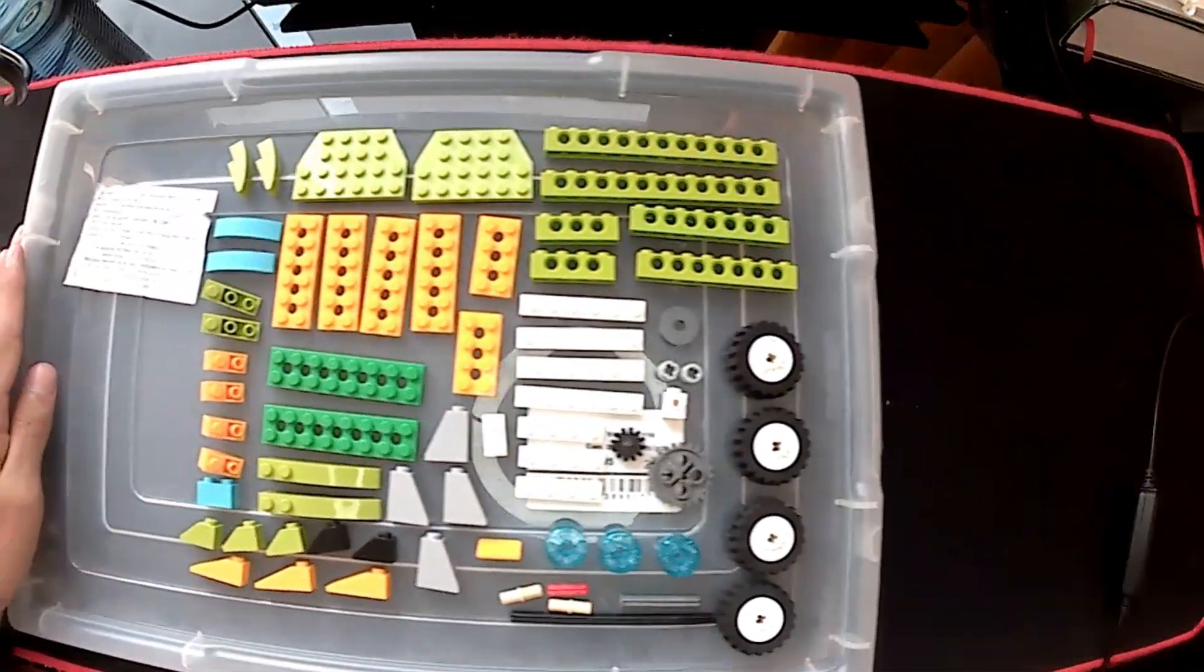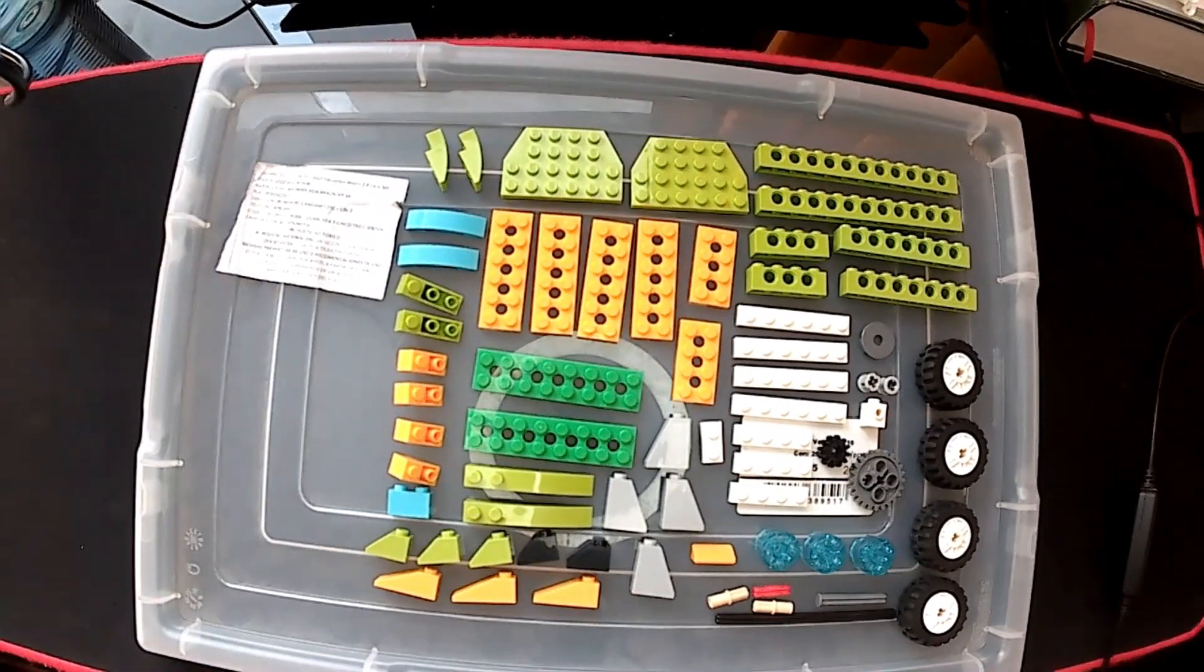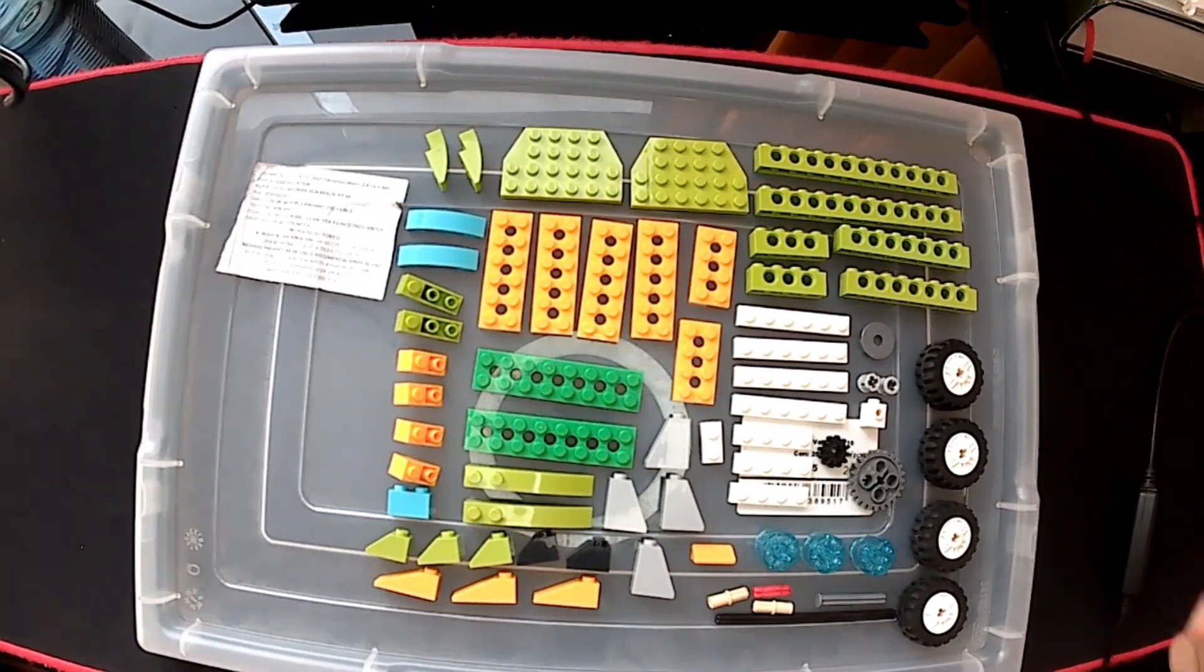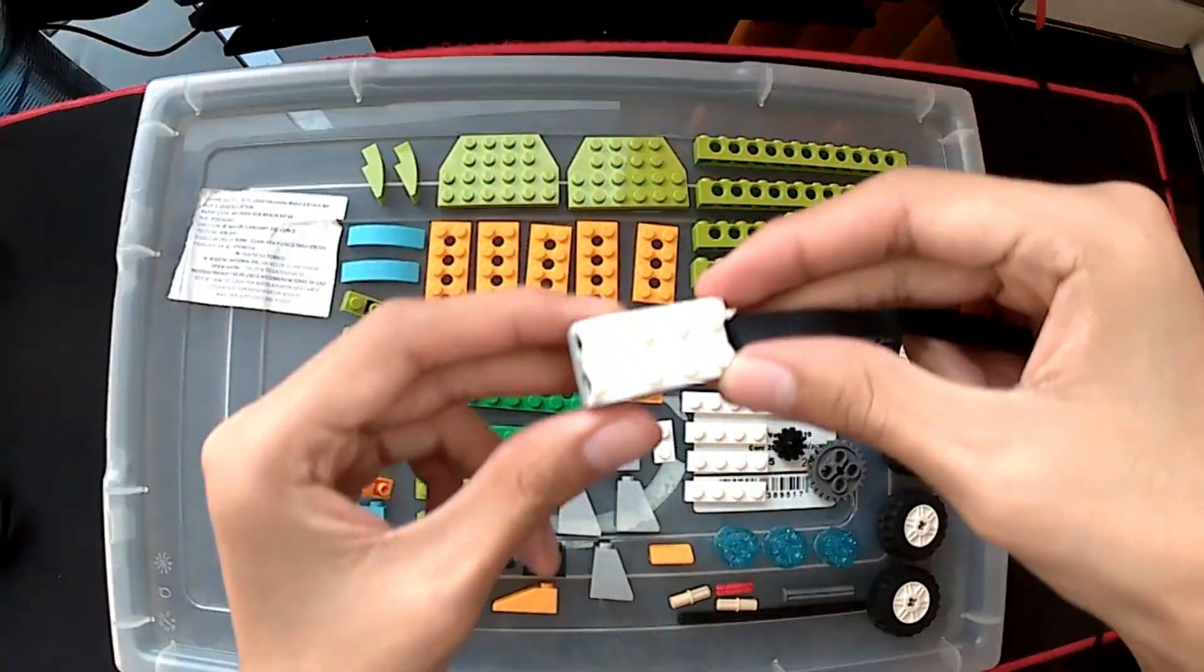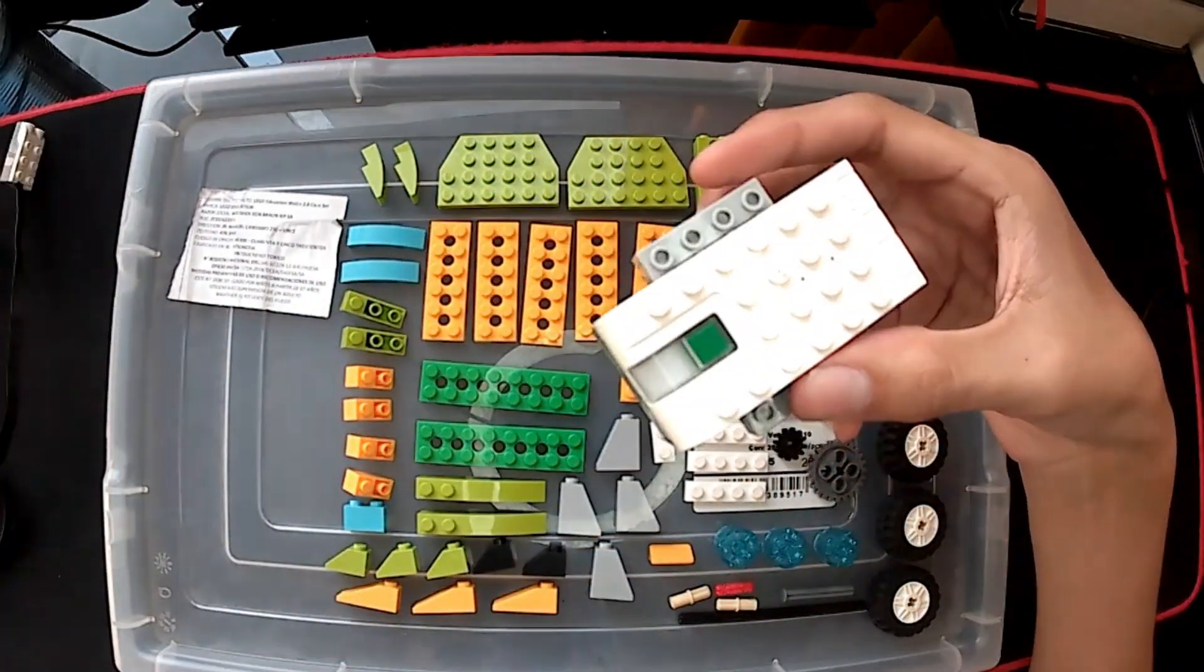For the anti-obstacle car, we are going to need these pieces, including the motor, the approach sensor, and the smart hub.